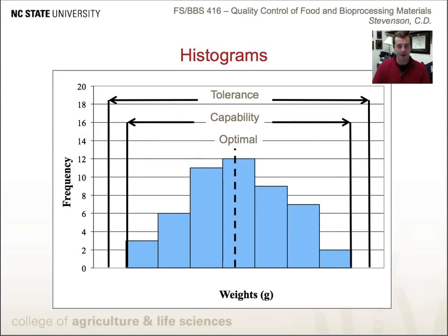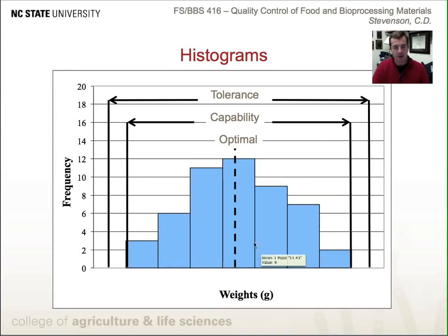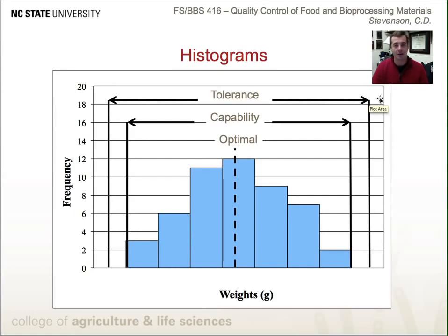Another diagram is the histogram. We put some sort of data characteristic such as weight on the x-axis and the frequency of that data on the y-axis to get a distribution. We can identify the optimal data point, characterize what the process is capable of, and identify some sort of tolerance. We'll cover histograms in much more detail later in the semester.